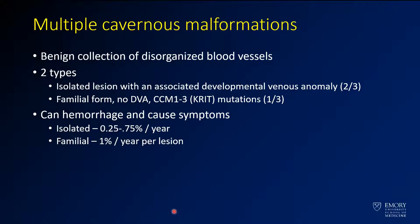Cavernous malformations are benign collections of disorganized blood vessels. You can see them in isolated form, which is the vast majority, but there are familial forms associated with congenital cavernous malformation genes, or CCM genes — about a third are related to those. The hemorrhage rate is around 1% or less per year; it's a little higher for familial lesions and a little less than 1% for isolated ones — so there is definite significant risk of hemorrhage.